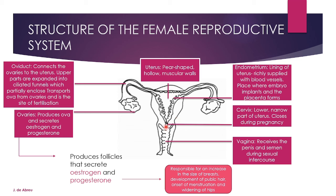The cervix is the lower and narrow part of the uterus, which closes during pregnancy. The vagina is the female reproductive organ — the ovaries are the female sex organs — and it receives the penis and semen during sexual intercourse. Estrogen and progesterone are responsible for an increase in the size of breasts, development of pubic hair, onset of menstruation, and widening of hips. You must be specific and use these exact descriptions.